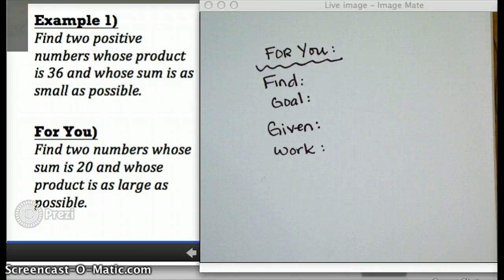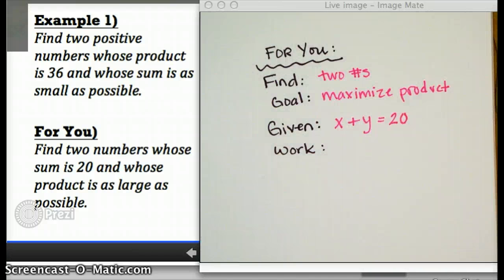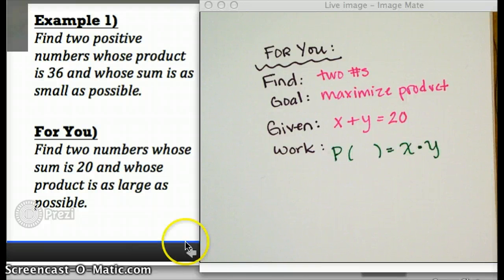Look at the one that says for you. Start out, set up your page. And I want you to tell me what are we trying to find, what's the goal, and what are we given? Right. Once again, we're trying to find two numbers. And our goal is to maximize the product. Remember, product means multiplication problem. We're given that the sum is 20. And so I've chosen x and y to indicate my two numbers. What's the next step? How do we start our work? Exactly. We always start by trying to create a function whose output is the thing we're trying to maximize.